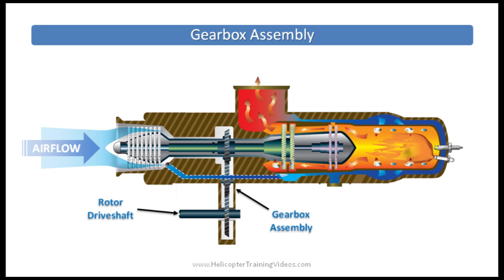The gearbox assembly: the N1, as we already said, drives the self-sustaining components — the compressor, the oil pump, the fuel pump, etc. The N2 is then geared out to the main and tail rotor transmission and any other accessories.